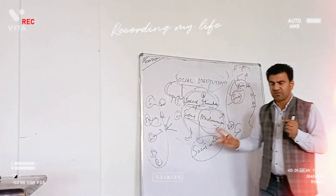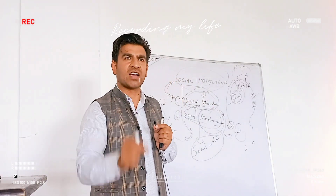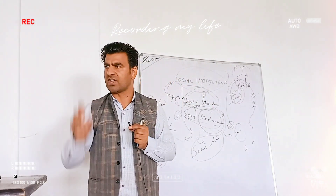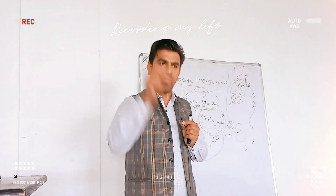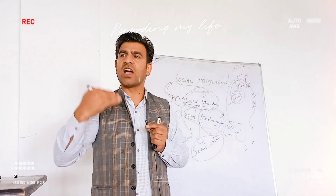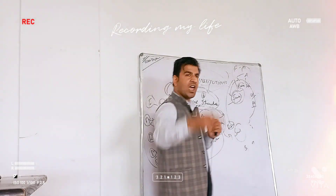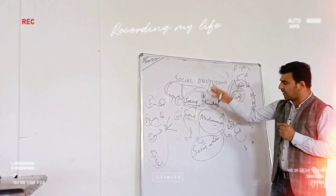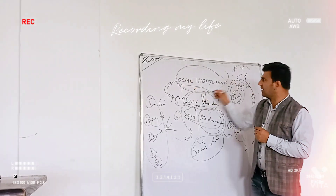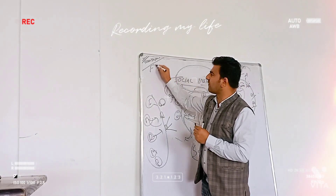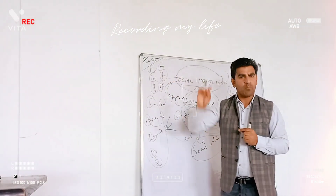In simple words, the structure and harmony of our society comes from our social structures and mechanisms. This structure and mechanism is called social institutions — which include family, marriage, kinship, religion, education, and market.